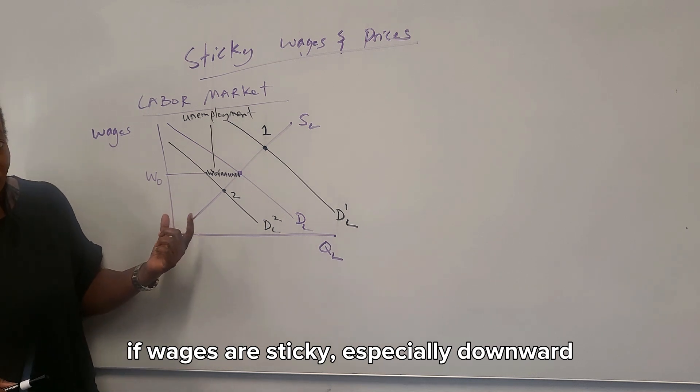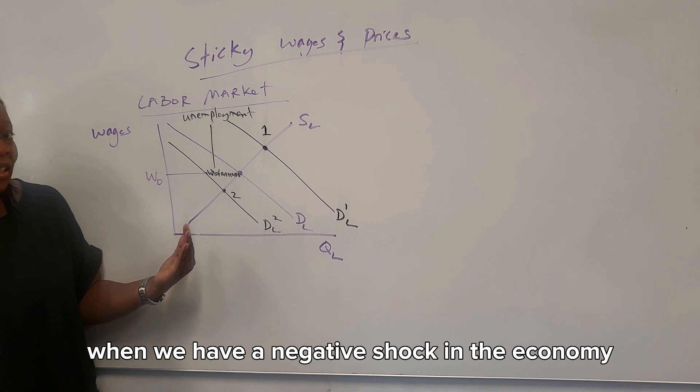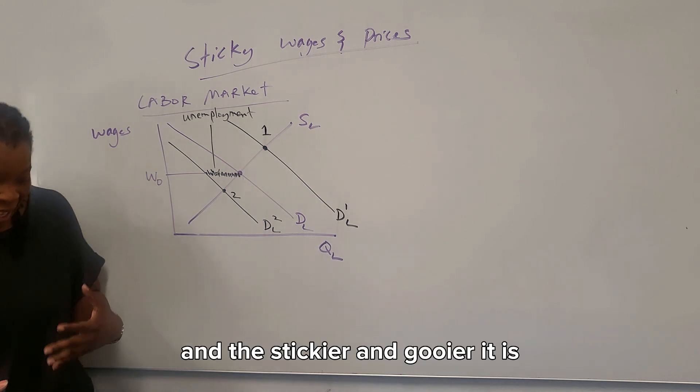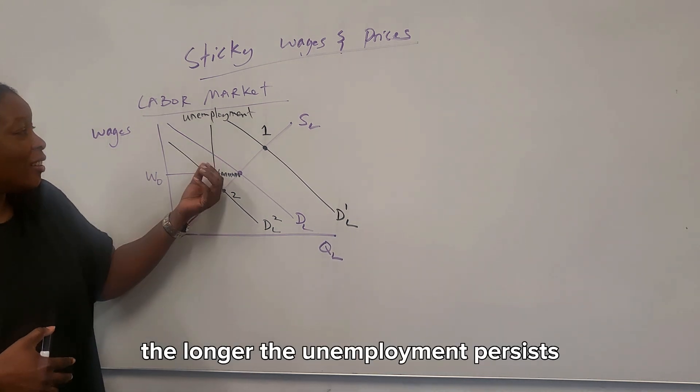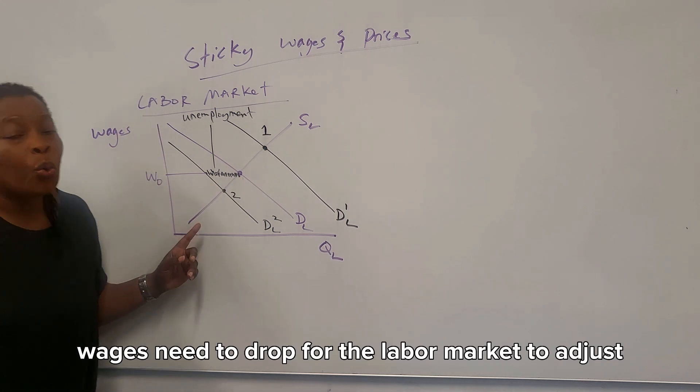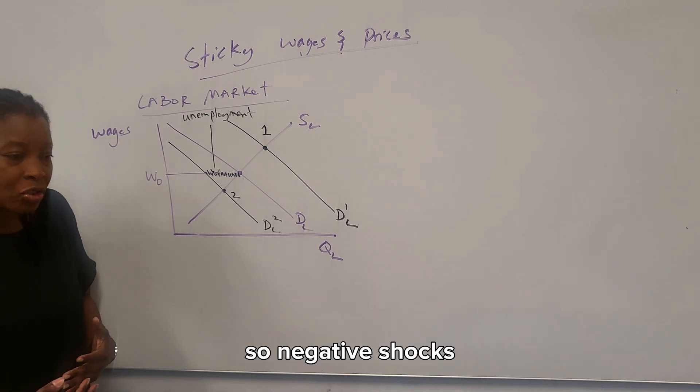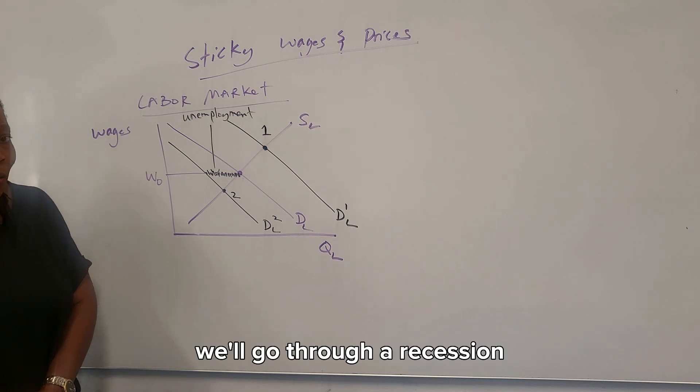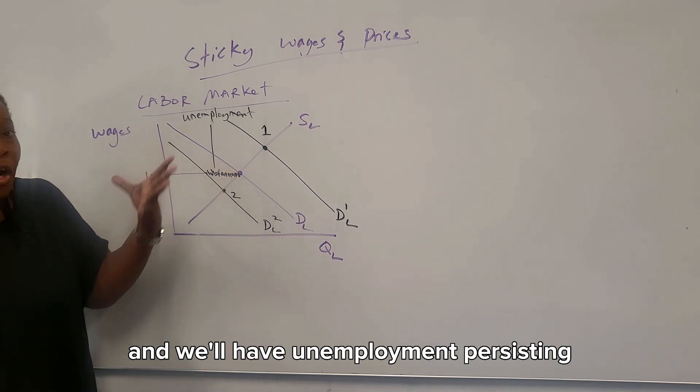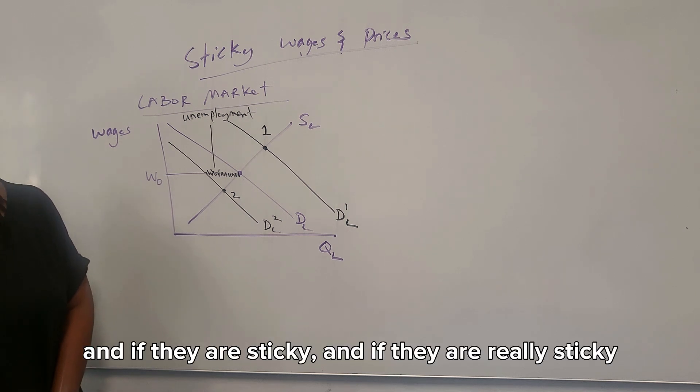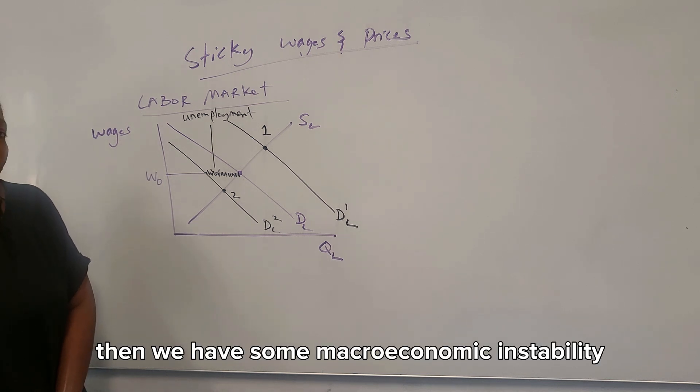And herein lies the crux of Keynesian economics. If wages are sticky, especially downward, when we have a negative shock in the economy, expect unemployment to be something that persists. And the stickier and the gooier it is, the longer the unemployment persists. Because really, wages need to drop for the labor market to adjust. If they don't want to drop, we end up with unemployment. So negative shocks can be very devastating for the economy. We'll go through a recession and we'll have unemployment persisting if wages don't come down. Wages are sticky. And if they are sticky, and if they are really sticky, then we have some macroeconomic instability.